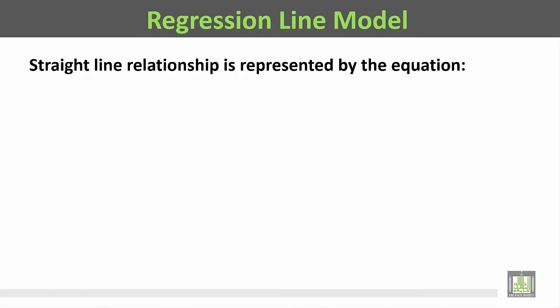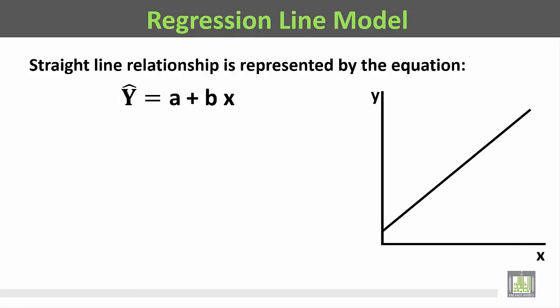The straight line relationship is represented by the equation y-hat is equal to a plus bx. This is the horizontal axis representing the values of the independent variable, and this is the vertical axis for the dependent variable. This is the regression line. The point of meeting of the regression line with the y-axis is the intercept.